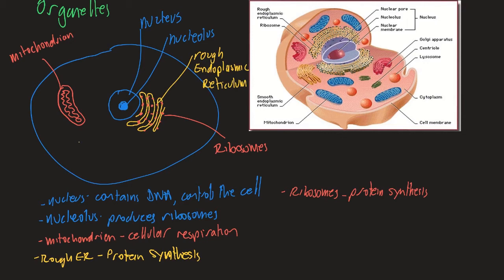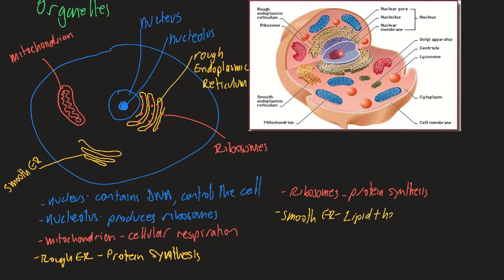There's another type of endoplasmic reticulum that doesn't have ribosomes attached to it, so it's called smooth endoplasmic reticulum — smooth ER. It's smooth because it doesn't have ribosomes and is not involved in protein synthesis. Instead, the smooth ER is involved in lipid and hormone synthesis — it makes lipids and hormones.